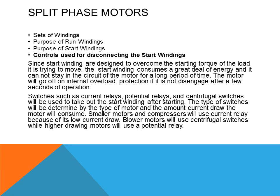Since the start windings are designed to overcome the starting torque of the load, they consume a great deal of energy and cannot stay in the circuit for a long period of time. The motor will trip on internal overload protection if the start windings are not de-energized or disengaged after a few seconds. Switches such as current relays, potential relays, and centrifugal switches are used to take out the start windings after starting. The type of switch is determined by the type of motor and the amount of current draw. Small motors and compressors use current relays; blower motors use centrifugal switches; higher current-draw motors use potential relays.